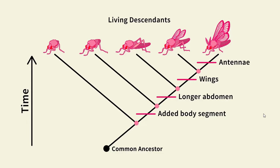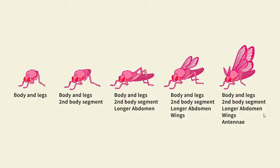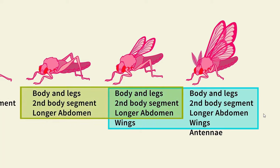Connections to common ancestors can tell you which creatures are more closely related. These two creatures share an ancestor that lived more recently than the ancestor they share with this creature. Another way to look at relatedness is to look at the number of traits that the creatures have in common — these two have more traits in common than these two.